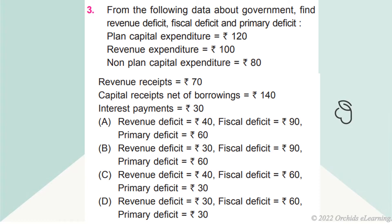From the following data about government, find revenue deficit, fiscal deficit, and primary deficit. Plan capital expenditure equals Rs. 120. Revenue expenditure equals Rs. 100. Non-planned capital expenditure equals Rs. 80. Revenue receipts equals Rs. 70. Capital receipts net of borrowings equals Rs. 140. Interest payments equals Rs. 30.